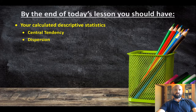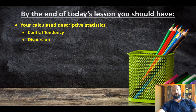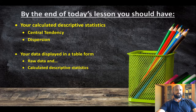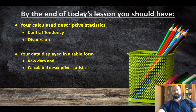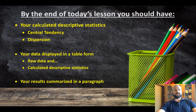So this is what we're looking at today. They should have one calculation of central tendency — that's your mean, median, or mode — and one of dispersion: range, standard deviation, etc. They should have their raw data in a table, which is what they use to collect their data, and they calculate descriptive statistics, also in a table.